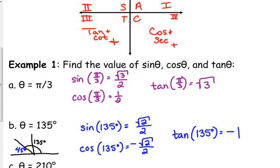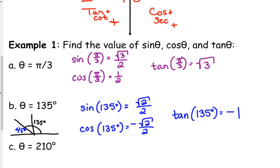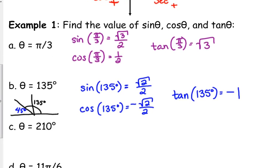Just write it as the sine of 135, cosine of 135. You can confirm this in your calculator, but the whole purpose of this exercise is so that we can do these without our calculator. Let's look at another degree example.